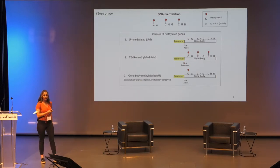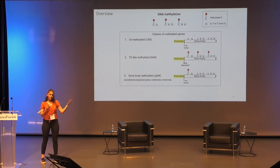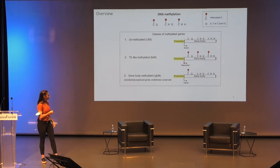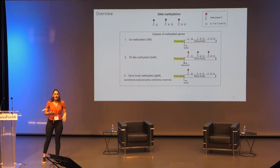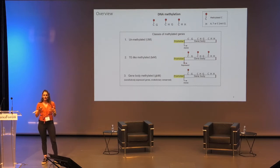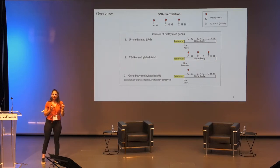Gene bodies can be divided into unmethylated genes, which have basically no DNA methylation across the gene bodies and are usually associated with active gene expression. Then we have this second class of TE-like methylated genes, which present high methylation in all the sequence contexts and are usually repressed. And then we have the third class, the gene body methylated genes, which present only CG methylation across the gene bodies. This class has raised quite a lot of interest in the scientific community, because it has methylation on the gene bodies but these genes are still associated with active expression.